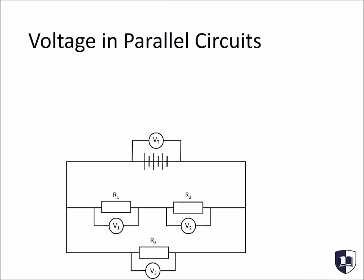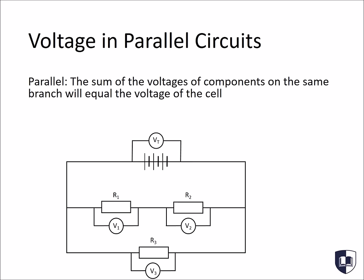For parallel circuits, it's a little different. In this case, the sum of the voltages of components on the same branch will equal the voltage of the cell. In other words, each branch gets the same voltage as that of the cell. So, in this diagram, the total voltage, or Vt, is equal to V1 plus V2, which is the same as V3.